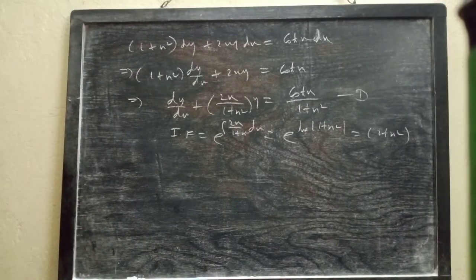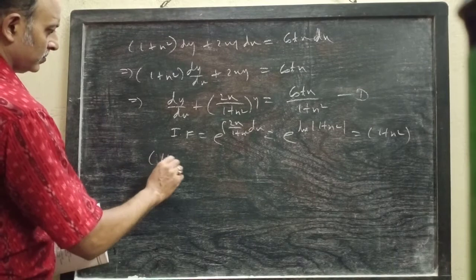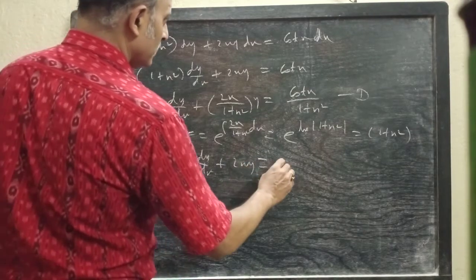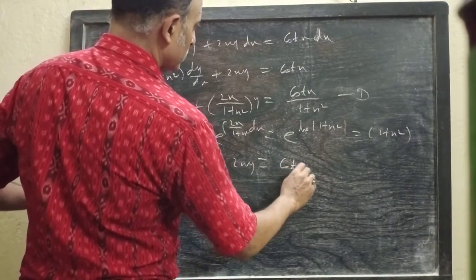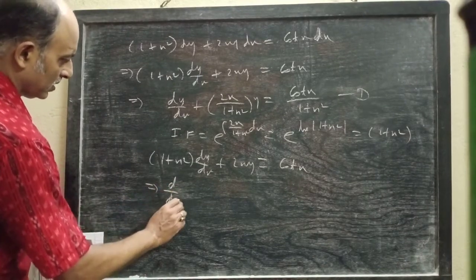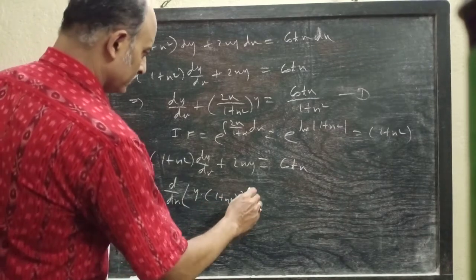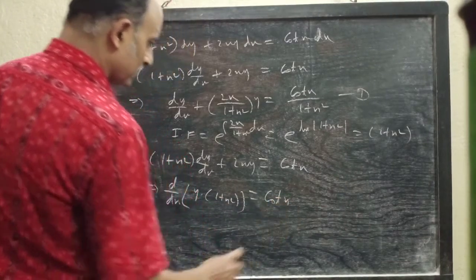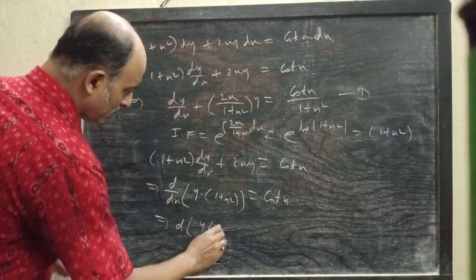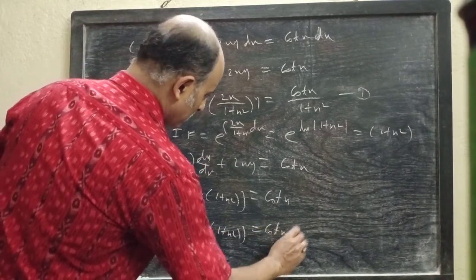Now multiplying both sides of equation (1) by (1 + x²), we get (1 + x²) dy/dx + 2xy equal to 4x. On the left side we can write d/dx of [y × (1 + x²)] equal to 4x. Then we write d of [y × (1 + x²)] = 4x dx.